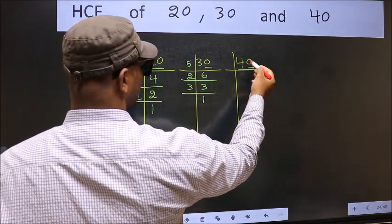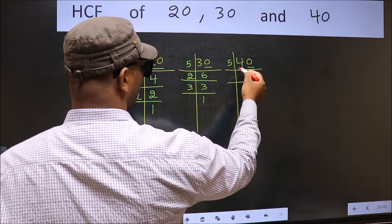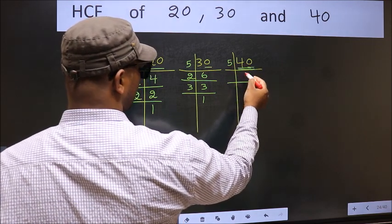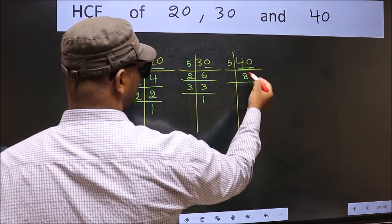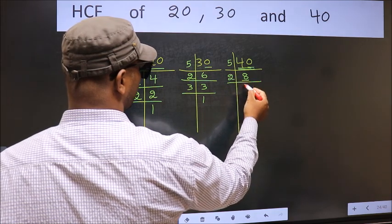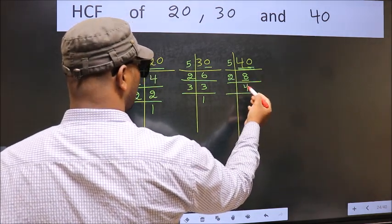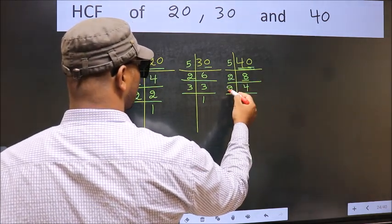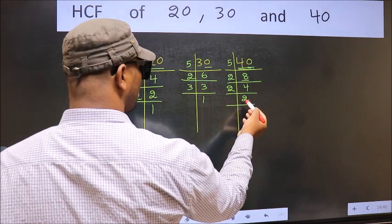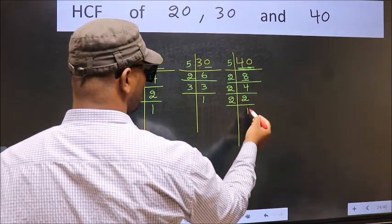Now the other number, 40. Last digit is 0, so take 5. When do we get 40 in the 5 table? 5 × 8 = 40. Now 8 is 2 × 4. Now 4 is 2 × 2. And 2 is a prime number, so 2 × 1 = 2.